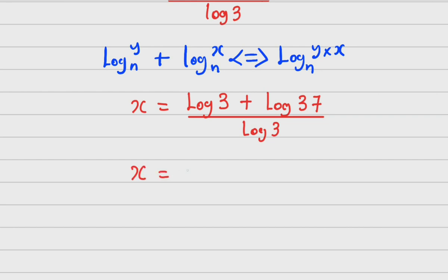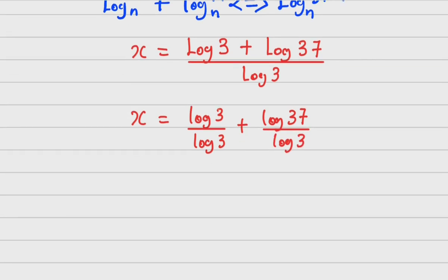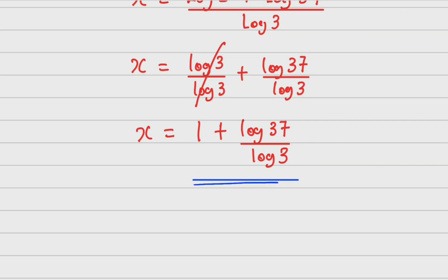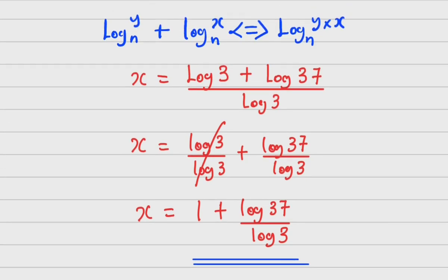Mathematically I can express this as log 3 over log 3, plus log 37 over log 3. You can see that log 3 over log 3 cancels out, so x equals 1 plus log 37 over log 3. This is where you can simplify further or keep it in decimal, but I'll terminate here as my answer. This is how to manipulate and work out an expression for x. Thank you for watching and don't forget to subscribe.